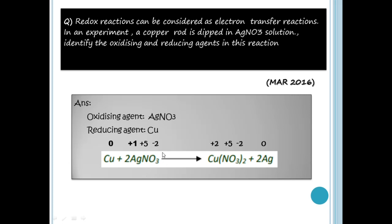In AgNO3, nitrogen is +5 and oxygen is -2. For the NO3 minus ion, the overall charge is minus 1.